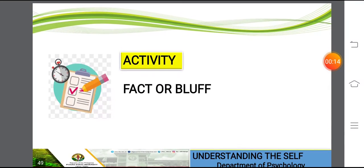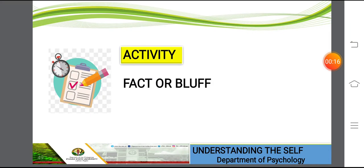Before that, let's proceed to your next activity. Kindly open your workbook. The activity is entitled Fact or Bluff. Examine the statement and write the word 'fact' if the statement is correct, and write the word 'bluff' if the statement is incorrect. Write your answer on the space provided in your workbook. There are 10 items to be answered Fact or Bluff.